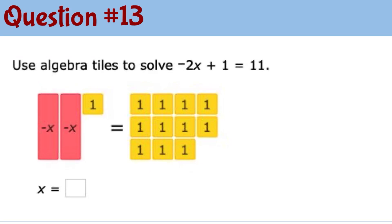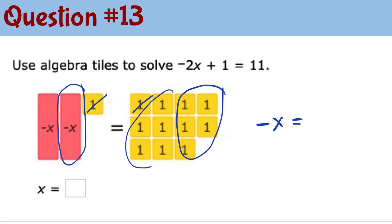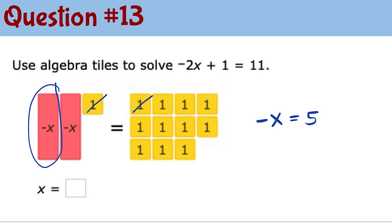Question number 13: I take out 1 unit tile on the left and also 1 unit tile on the right. We still have 10 unit tiles that need to be split up between the 2 negative x tiles, so each negative x tile gets 5. That means negative x equals 5, so x equals negative 5. This is the same as multiplying or dividing both sides by negative 1, so the x value here is negative 5.